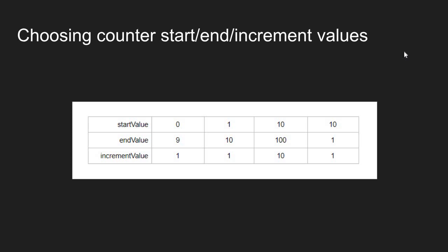Let's look at some example counters. If we wanted a counter-controlled loop that looped ten times, we could start at zero and end at nine, counting by ones — that's ten steps. Or start at one and count up to ten by ones — also ten steps. Or count from ten up to one hundred by tens — also ten steps. Or start at ten and count down to one by ones — also ten steps. There are an infinite number of possibilities, so we need to develop some intuition on what would be optimal counter values.